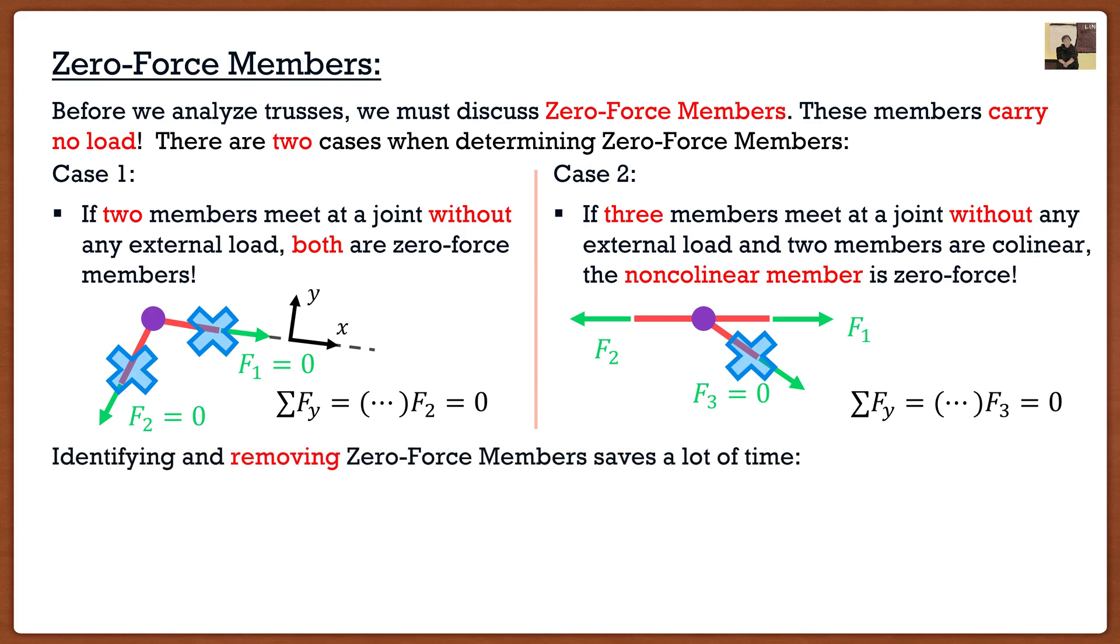Now you're saying okay Clayton, it's pretty easy to see these two cases, but what is the importance of this? Well, it helps simplify our questions. If we identify and remove these zero-force members, our truss questions actually become rather simple. Give me an example, no problem.